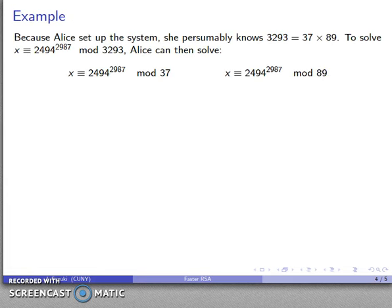For example, let's take Alice's crypto system, and again, she knows what the factorization of 3293 is. So if she wants to evaluate 2494 to power 2987 mod 3293, she can solve this system of congruences. But she's not going to solve this system of congruences. She's going to be clever and reduce this to a simpler system.